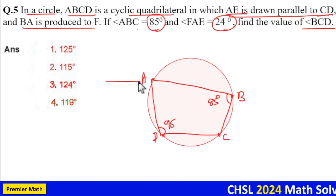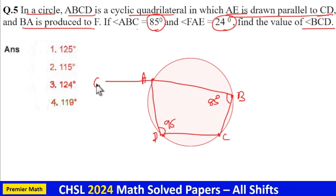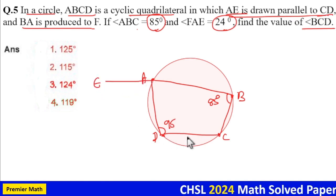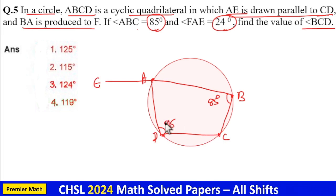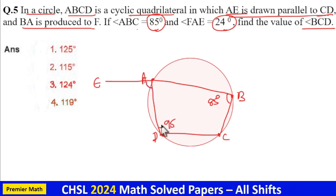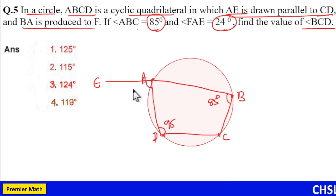Now draw AE parallel to CD. You can see these two lines are parallel lines, which means these two angles are alternate angles. Alternate angles are the same.